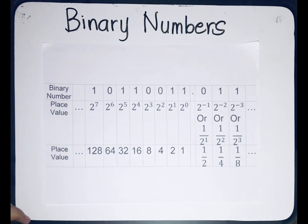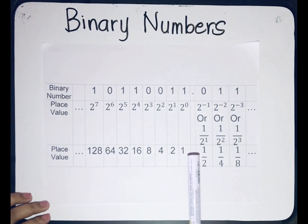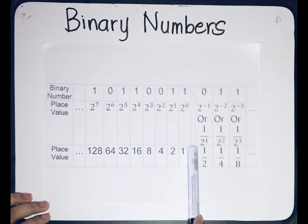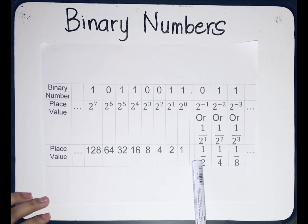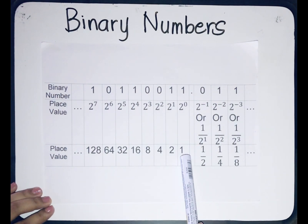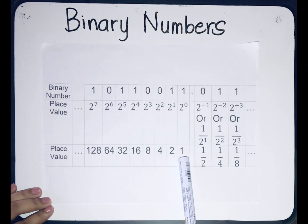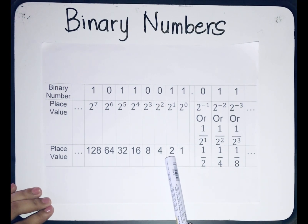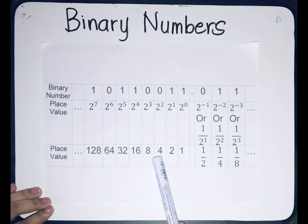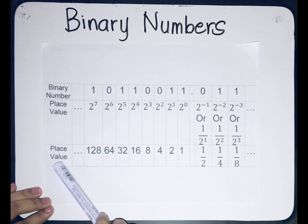So remember these place values. On the left side, the place value always starts with 1. To identify the next place value, just multiply by 2. So starting with 1, times 2 gives 2, times 2 gives 4, times 2 gives 8, times 2 gives 16, times 2 gives 32, and so on.